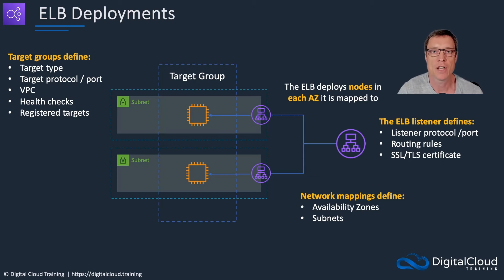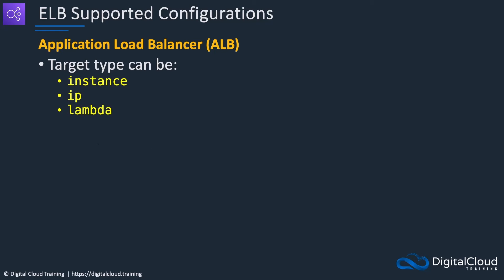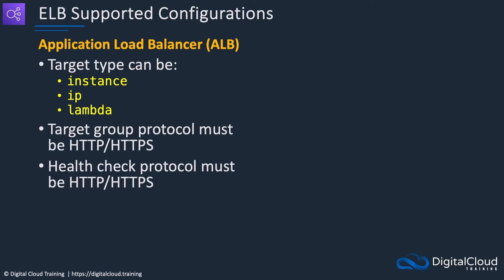Let's look at the supported configurations for ALB versus NLB. For ALB, the target type can be instance, IP address, or Lambda function. The protocol must be HTTP or HTTPS. The health check protocol must also be HTTP or HTTPS — you cannot use TCP even if you specify the correct port number like TCP 80. If you do, you won't be able to see the target group when you create the load balancer through the console and you won't be able to attach it by any means.